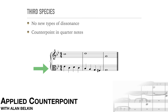A third species counterpoint has twice as many notes as a second species example. Given the limited range of an untrained human voice, this means that the same pitches will often come back several times. How can we bring them back without monotony?